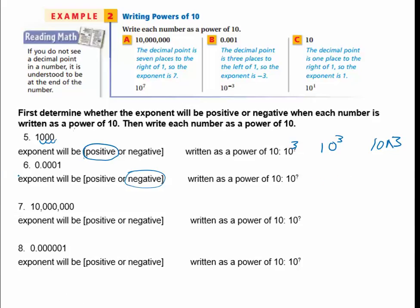Number 6 has a negative exponent. Count from the decimal point, moving to after the 1: 1, 2, 3, 4. It's 4, but not just 4 — it's negative 4. So it's 10 to the negative 4th, because we're going to have a negative exponent since this was a little number.